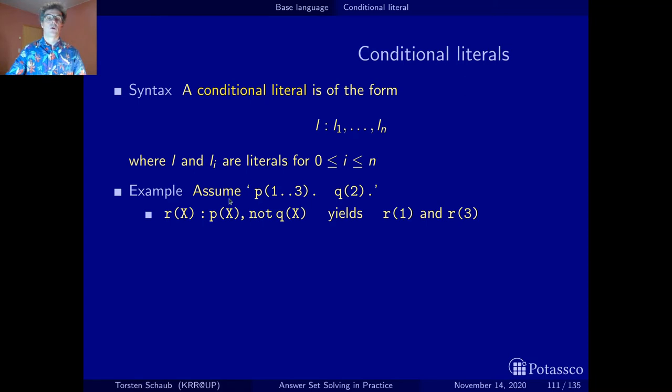And now when we form this conditional literal, again think of it as a set. We look at all the axes that belong to p and do not belong to q. And for all the axes where this is true and obviously this is the case for 1 and 3, we generate an instance of predicate r.